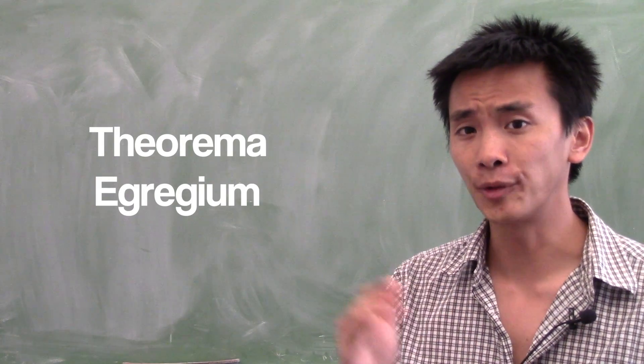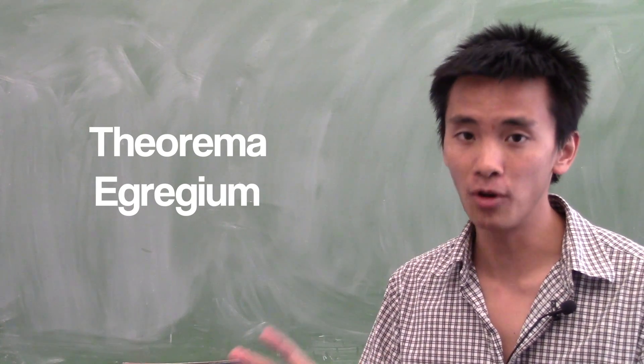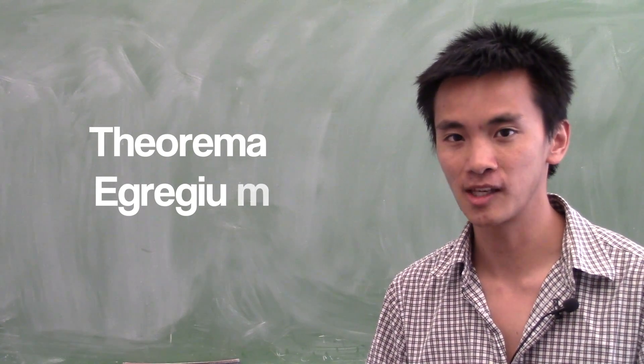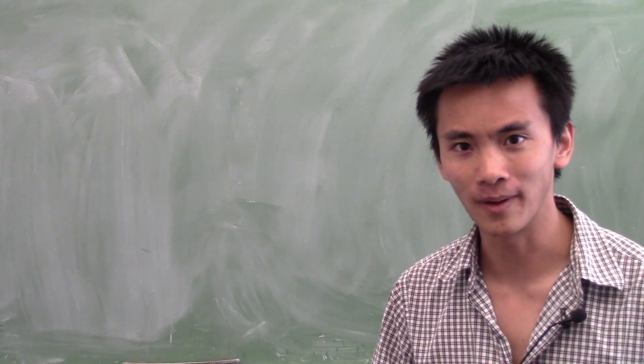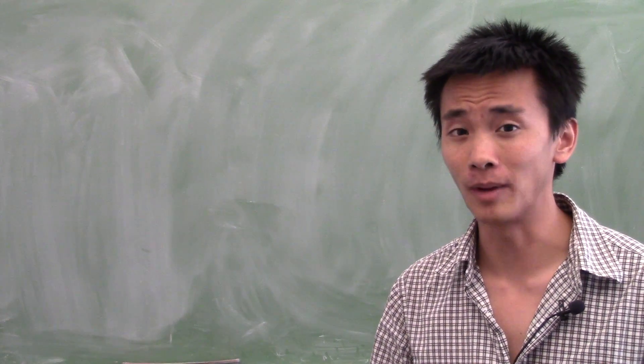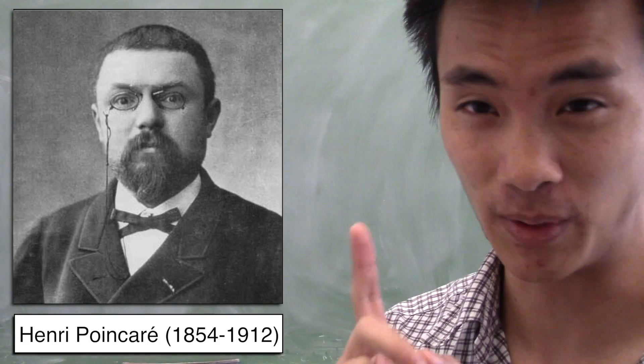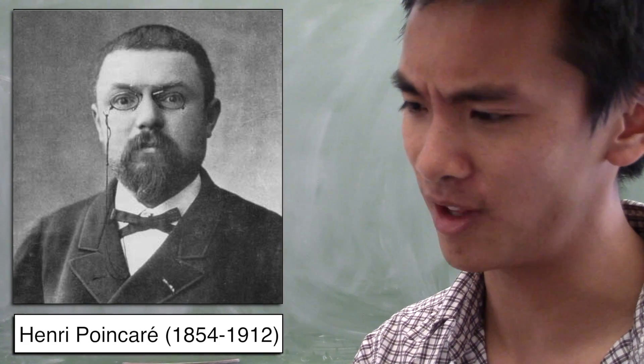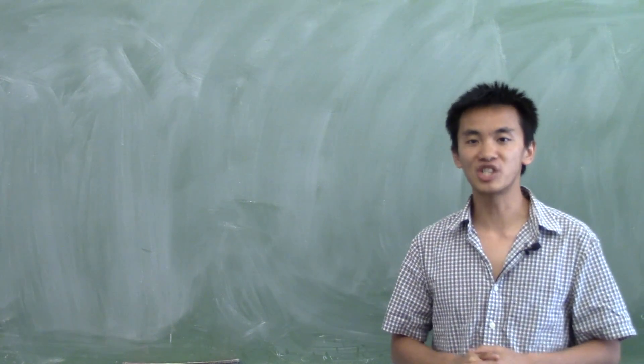Well, first I should say that Gauss's theorem egregium guarantees that we cannot find a perfect map of the hyperbolic plane. But maybe we can come up with a conformal map. And in fact, I'm going to present to you my favorite conformal map of the hyperbolic plane. It's called Poincaré's map, although I shouldn't call it the Poincaré map because the Poincaré map is something else. Yeah, that's the problem with math—Poincaré did so many things.